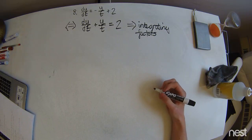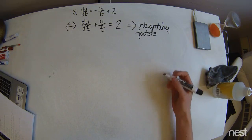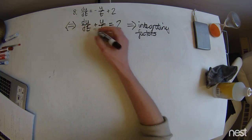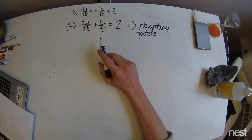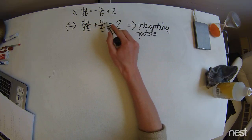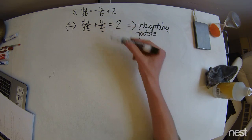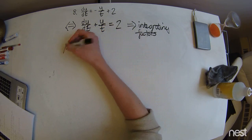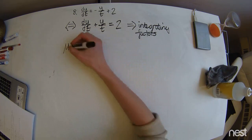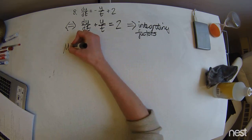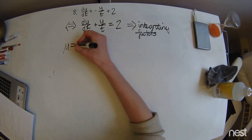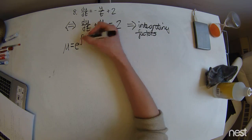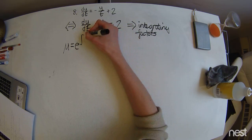First we're going to find mu. And we're going to set that to what's multiplying the dependent variable. We don't set it to just that — we set it to e to the integral of that.